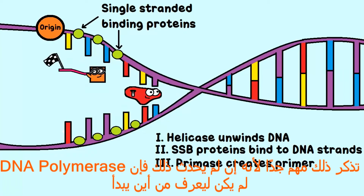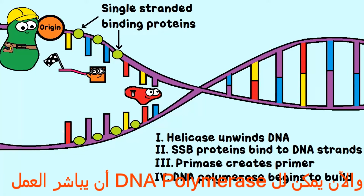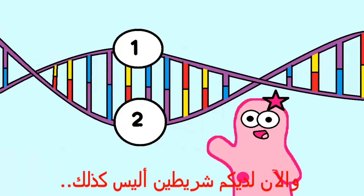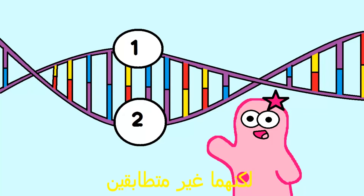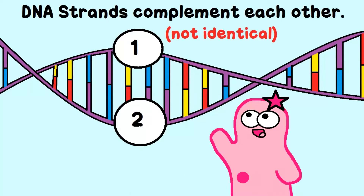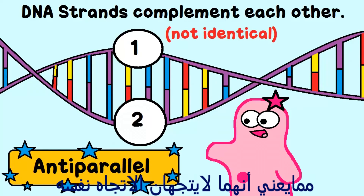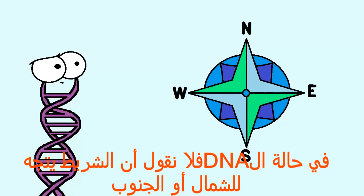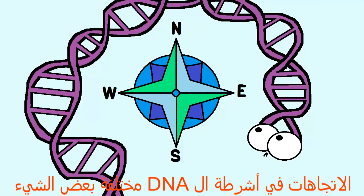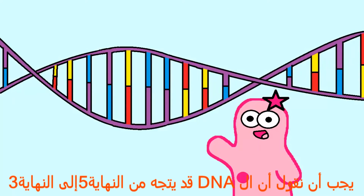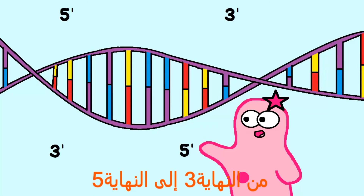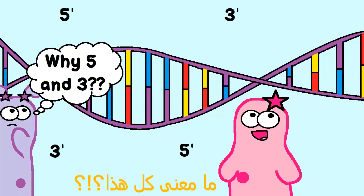That's really important because otherwise, when DNA polymerase comes in, it wouldn't know where to start. Now DNA polymerase can get to work — it's the important enzyme that adds DNA bases. Now, you have two strands, right? They're not identical. Remember, they complement each other. They also are anti-parallel, so that means they don't really go in the same direction. With DNA, we don't say a strand goes north or south. The directions for the DNA strands are a little different. We say that DNA either goes 5' to 3' or 3' to 5'. This can seem very confusing — what in the world does that mean?